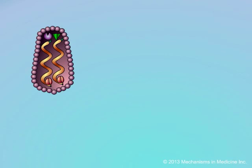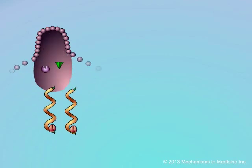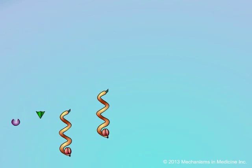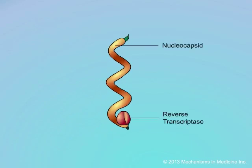The capsid then sheds its coat. The two viral RNA strands, which are themselves coated, and the viral enzymes are then released into the host cell cytoplasm.